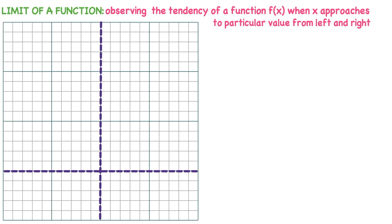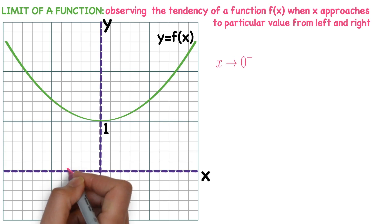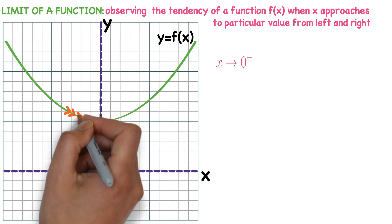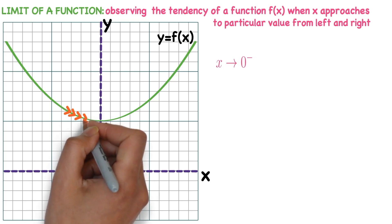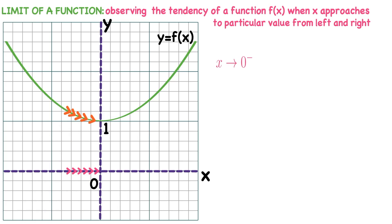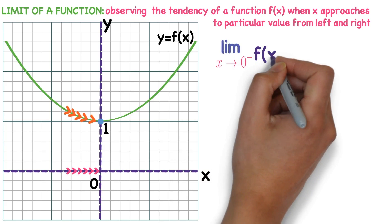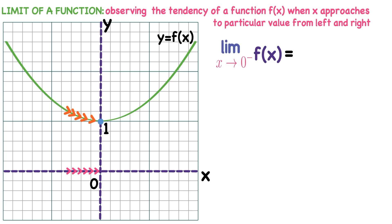Consider the coordinate axis — x-axis, y-axis, origin. I take a curve y equals f(x). When x approaches to 0 from left, all x values approach 0 from the left side. Now observe where f(x) is approaching — the graph is approaching the value 1. As x approaches 0 from left, f(x) approaches 1 from the left. So the limiting position of this function when x approaches 0 from left is 1. We say that 1 is the left hand limit of the given function.